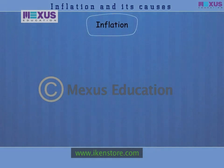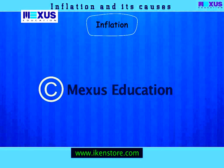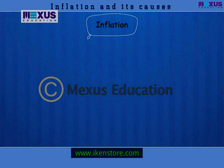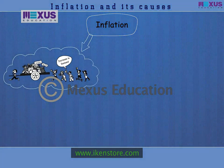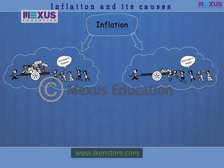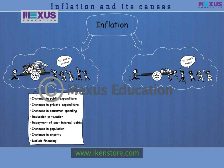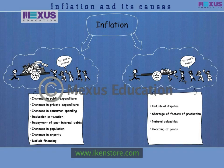To summarize, factors that cause inflation are increase in the demand for goods and services and decrease in the supply of goods and services. The causes for increase in demand for goods and services include public expenditure, private expenditure, consumer spending, taxation reduction, debt repayment, population growth, exports, and deficit financing. The causes for decrease in supply include industrial disputes, shortage of factors of production, natural calamities, and hoarding of goods.